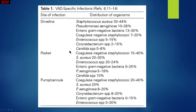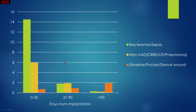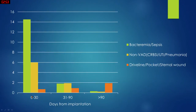The bacteria involved in VAD-specific infections are mostly skin flora. Looking at the time frame, within one month after implantation the most common infections are bacteremia and sepsis, followed by non-VAD infections such as pneumonia or cholecystitis. After one to two months, VAD-specific infection incidence increases slightly but remains low.